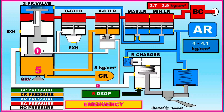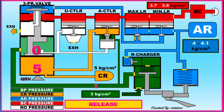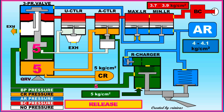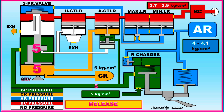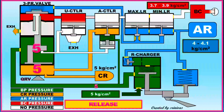AR has a practical pressure of 4 kg per cm². To release brakes after emergency application, refeeding with 5 kg per cm² should be done with the A9 valve. When both CR pressure and BP pressure are equal, the hollow stem comes down. Then AR comes into charging through the R charger and BC is released through the 3-pressure valve. During application, AR pressure goes into BC, but when BC pressure is released, it does not go back into AR — it goes to atmosphere through the 3-pressure valve.